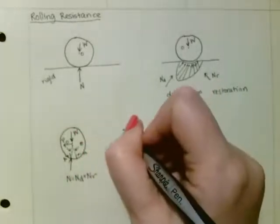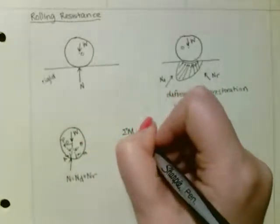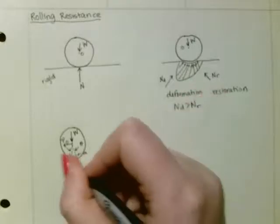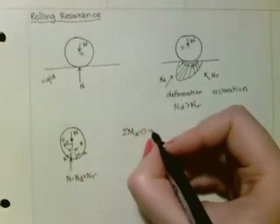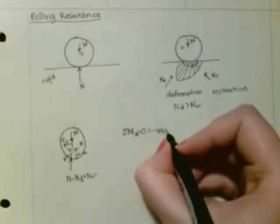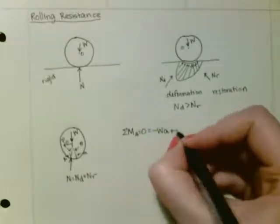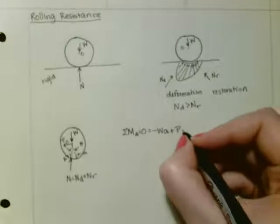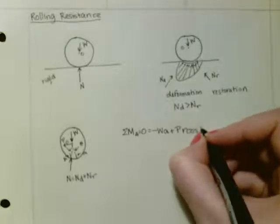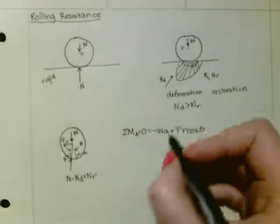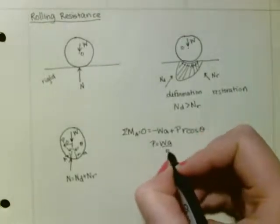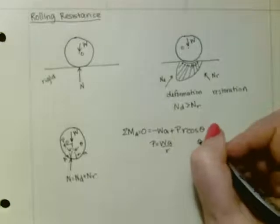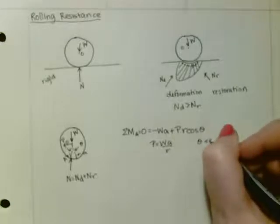If we were to take the moment and sum it about point A, we would get negative WA, because that's going clockwise, plus P times the radius R times cosine of theta. Such that P would be equal to WA over R, because theta is very, very small.